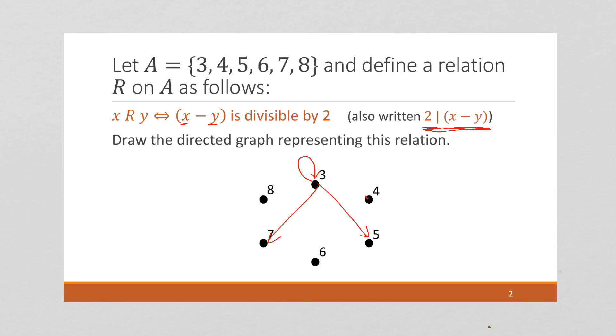Now, each of these elements, if you subtract it from itself, is going to give you 0. So, all of these have loops to themselves.